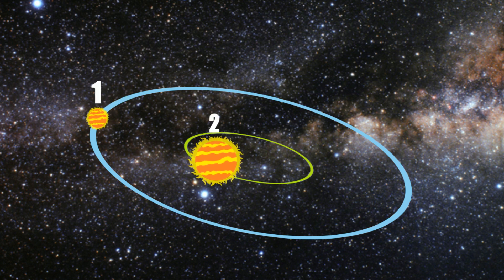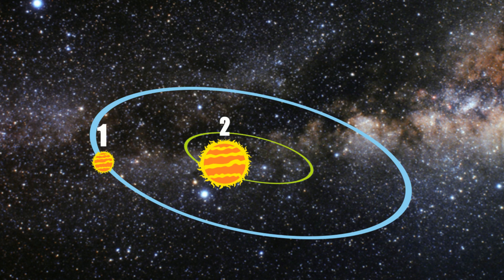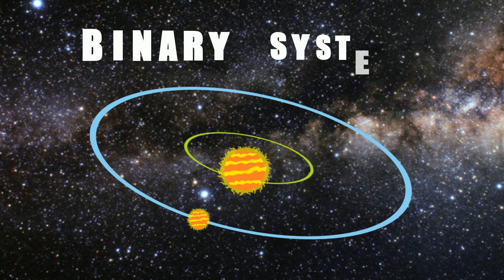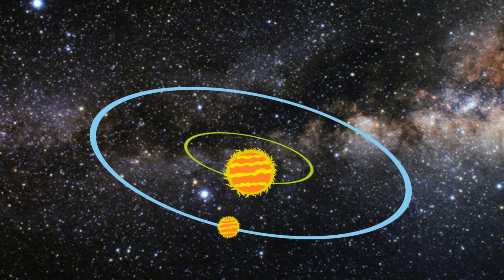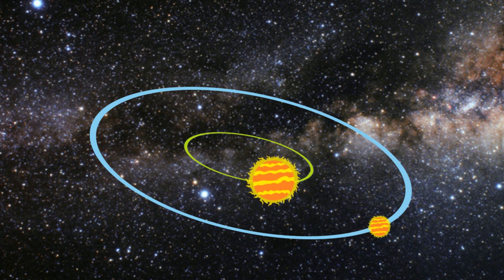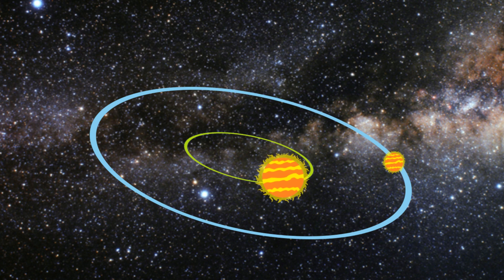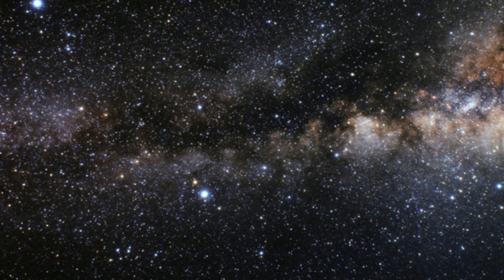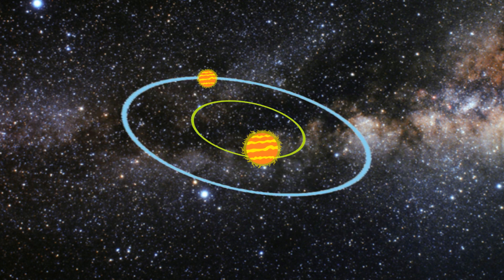Two stars orbiting each other, but let's talk more about binary systems. Binary stars always have to be named like Kepler A, Kepler B. Let me show you some more examples.